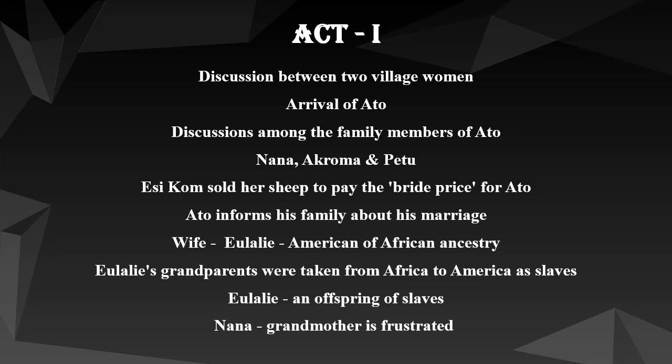Nana, the grandmother, is happy for the return of her grandson while she is still alive. She complains that darkness has fallen but the women have not lit the light. Ato calls them, and his uncles Akroma and Petu come at the same time. Nana suggests that Akroma should take his wife to a famous herbalist called Kofikrom, instead of depending on the white man's medicine alone, which seems to be ineffective. They gather as a family, including discussing how Ato, the firstborn, was humbly growing up. Petu asks for the sheep that Esicom was rearing, and she reports she sold it to pay the bride price for Ato.